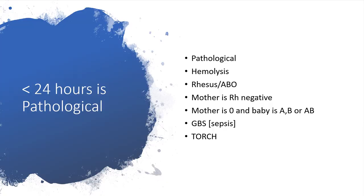Pathologic jaundice will occur in less than 24 hours of life. So if a mother is presenting the newborn at the clinic and the hours after birth is less than 24 hours — neonates being those kids from the first hour of life to the first 28 days of life — that is pointing to pathologic jaundice. The hours after birth will give the first clue.